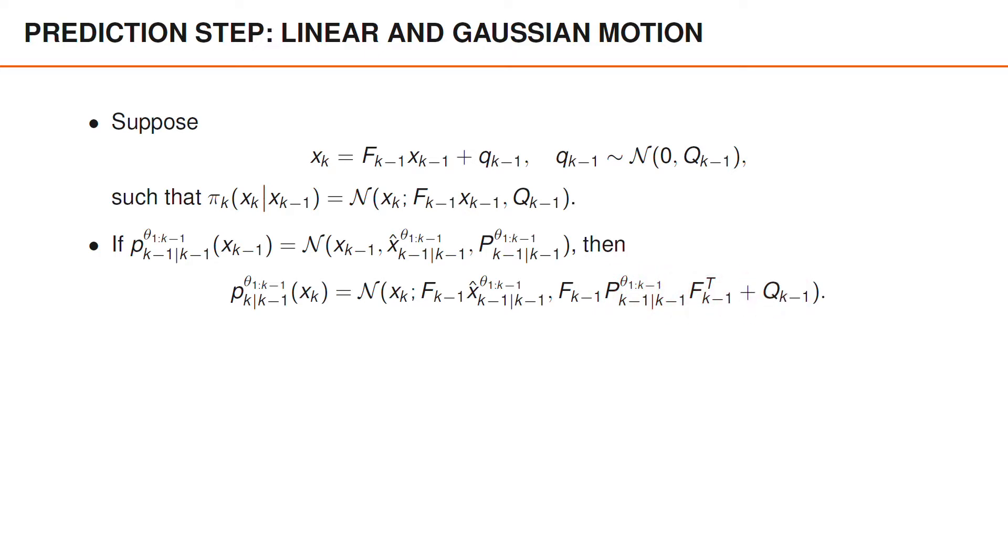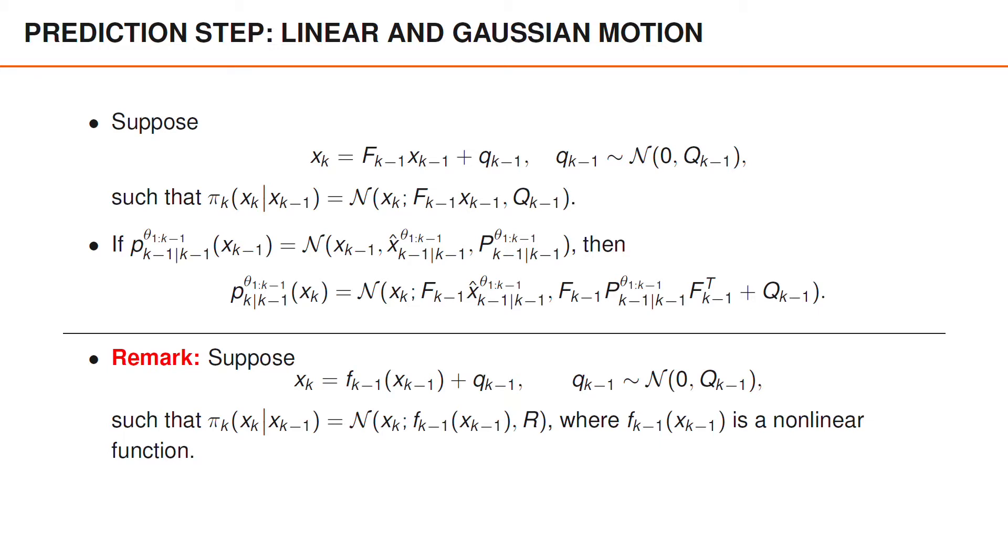Under the linear and Gaussian assumptions, the prediction step therefore consists of performing one Kalman filter prediction for each hypothesis. If we instead assume that x_k is some nonlinear function f_{k-1} of x_k, it is typically no longer possible to find a closed form expression for the predicted density. However, we can use a Gaussian filter for nonlinear models to approximate the predicted density as Gaussian. Simple alternatives may be to use an extended Kalman filter or a cubature Kalman filter.